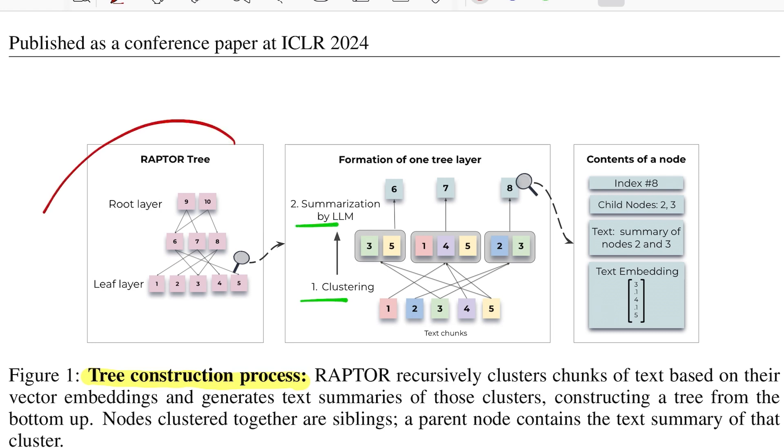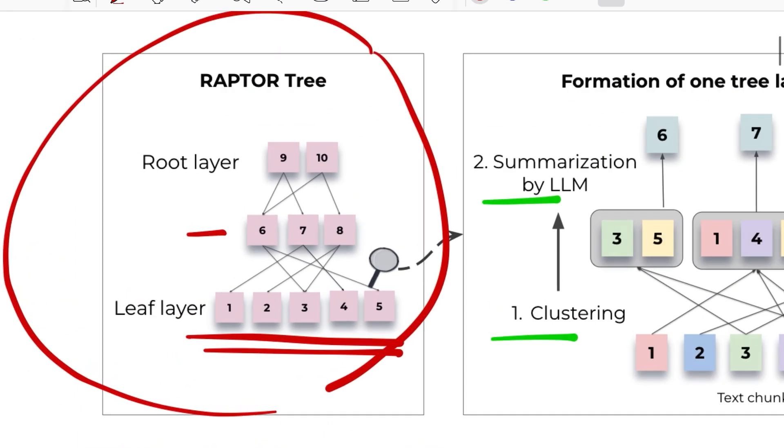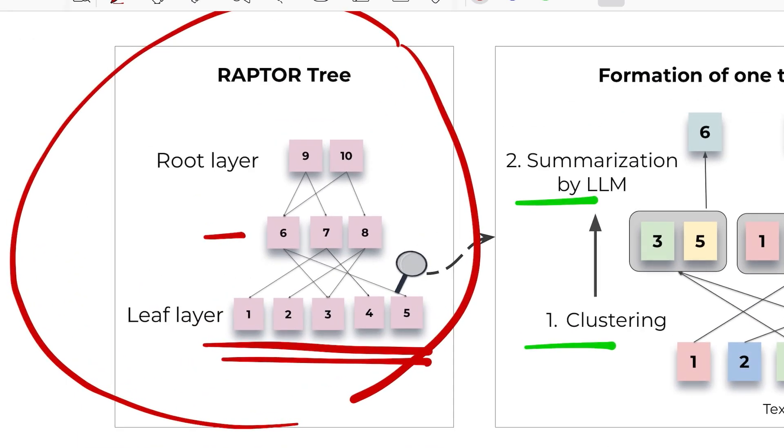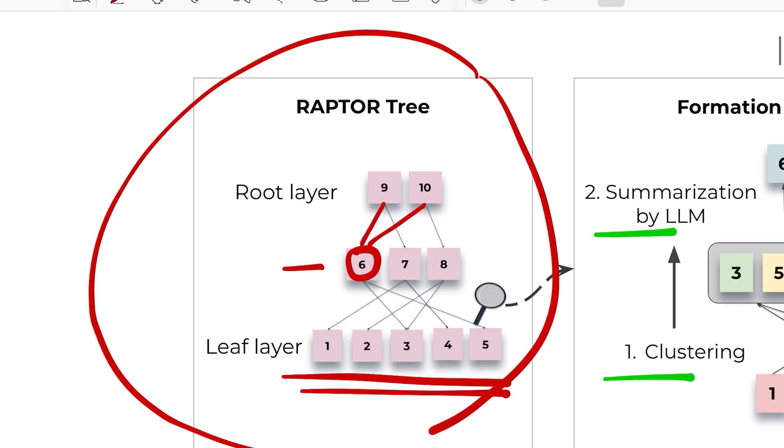So this is how your RAPTOR tree representation of your documents looks like. You have a leaf layer which has let's say five chunks, and then some combination of these make up six, seven, and eight, and then some combination of these middle layers make up the root layer which is nine and ten. Now a thing to notice here is there is no one-to-one mapping for the lower layers to the above ones.